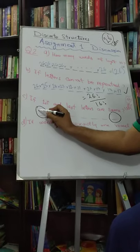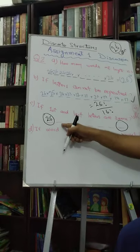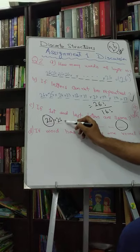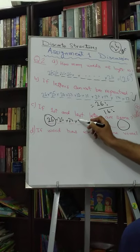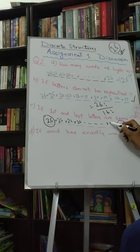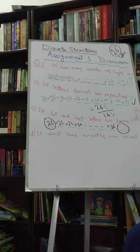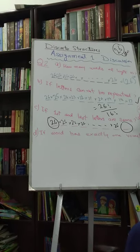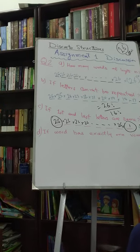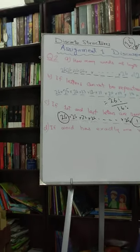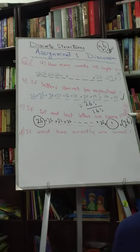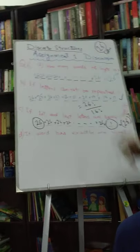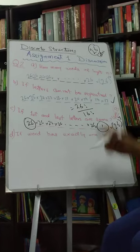So for the first position, how many choices do we have? 26. For positions 2 through 7, assuming letters can be repeated, it's again 26 each time. But the last position has only one choice — it must match the first. So multiplied by 1, this is going to be 26 raised to the power 7. Effectively we have 7 free letter positions.